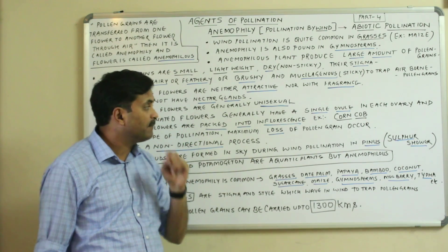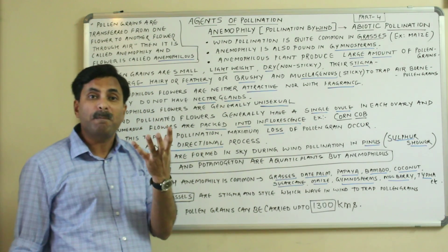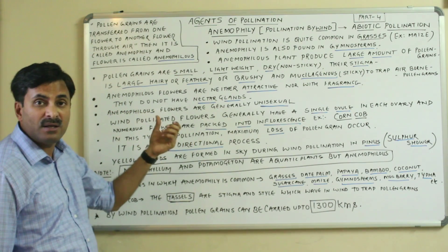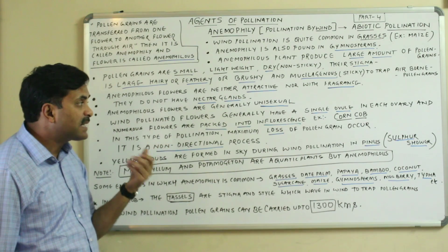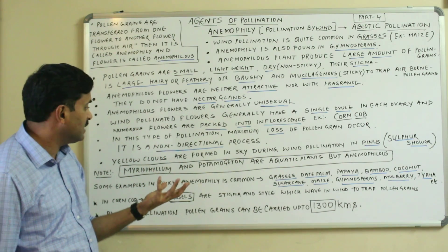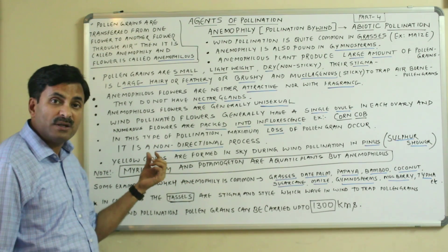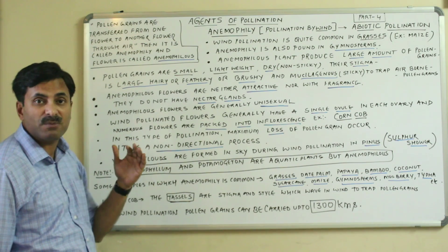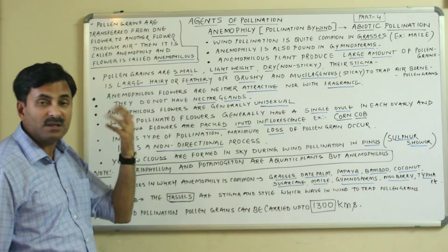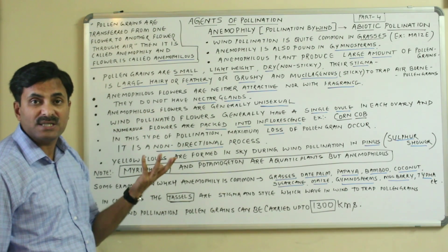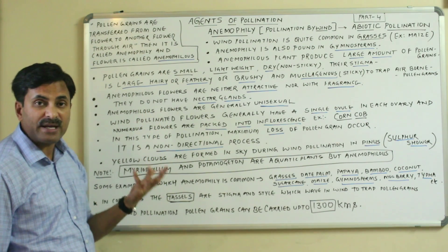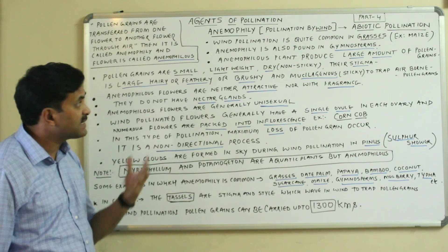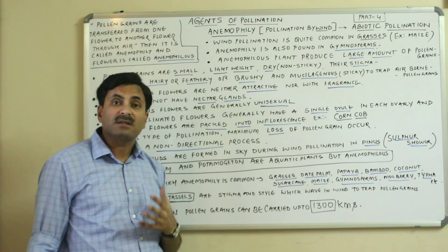In wind pollination, maximum loss of pollen grains occurs. Wind pollination is also a purely non-directional process — wherever the wind blows, the pollen grains move. So it is not a directional but a non-directional process.